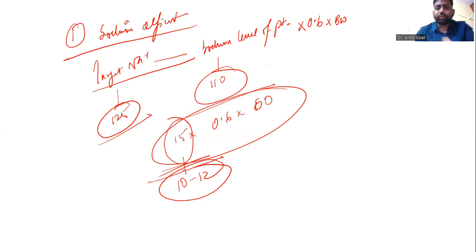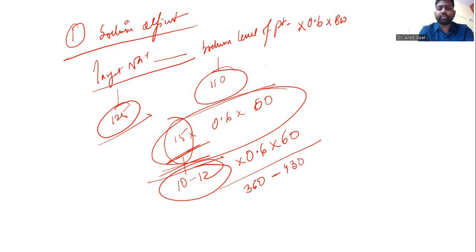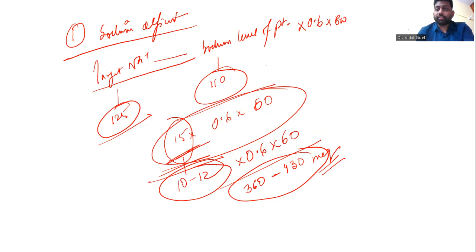Basically, instead of using 15 in this formula for sodium deficit, just put 10 to 12, multiply by 0.6, multiply by body weight of 60. You get your sodium deficit, which comes out to a range of approximately 360 to 430 milliequivalents of sodium. This is the sodium deficit that has to be corrected in the first 24 hours of TOR syndrome — no need to calculate a larger 15 or 20 milliequivalent deficit immediately.